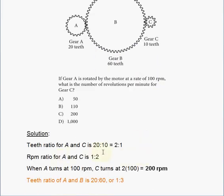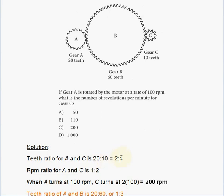Okay, so the teeth ratio for A and C is 20 to 10. In other words, 2 to 1, right? Because if you divide both sides by 10, you get 2 to 1. RPM ratio for A and C should be the other way around, 1 to 2. So if A turns at 100 RPM, which is a given, C will turn at 2 times 100, which is 200 RPM. There you go. That's your answer. Answer choice C.